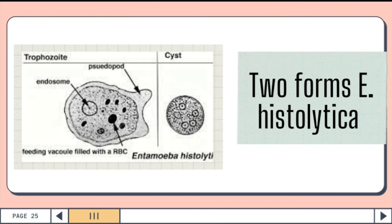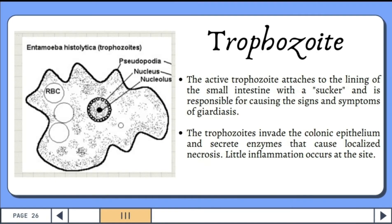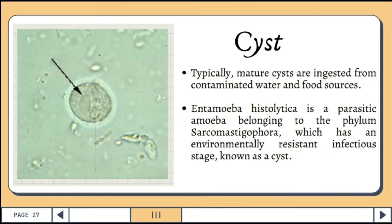The two forms of Entamoeba histolytica are the trophozoite and the cyst. As a lesion reaches the muscularis layer, a typical flask-shaped ulcer forms, which can undermine and destroy large areas of the intestinal epithelium. Mature cysts can have four characteristic nuclei. Entamoeba histolytica is morphologically very similar to the non-pathogenic species Entamoeba dispar.